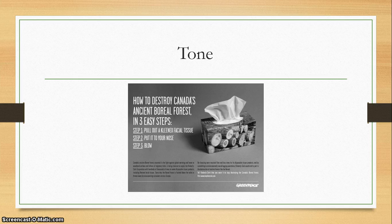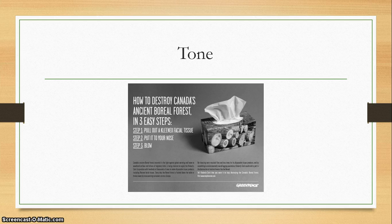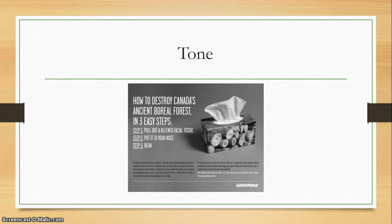It says: 'How to destroy Canada's ancient boreal forest in three easy steps. Step one: pull out a Kleenex facial tissue. Step two: put it to your nose. Step three: blow.' We can see that this is a sarcastic ad — they don't want us to do that. The organization is Greenpeace; they don't want to destroy forests. So they're using a really sarcastic tone to try to get their point across. Much like an allusion, sarcasm is a risky strategy because people don't always get it. But if you know a little something about the organization and have a good feel for tone, you can detect that it's sarcastic pretty easily.